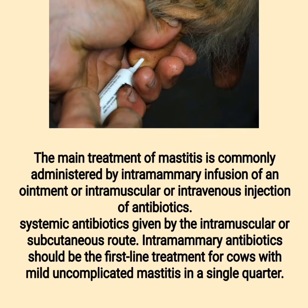The main treatment of mastitis is commonly administered by intramammary infusion of ointment, or intramuscular or intravenous injection of antibiotics. Systemic antibiotics given by the intramuscular or subcutaneous route — intramammary antibiotics should be the first-line treatment for cows with mild, uncomplicated mastitis in a single quarter.